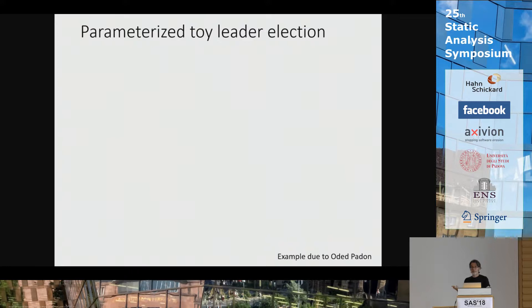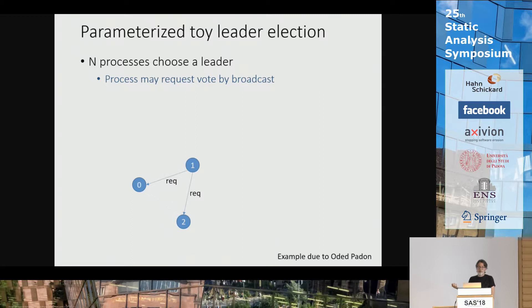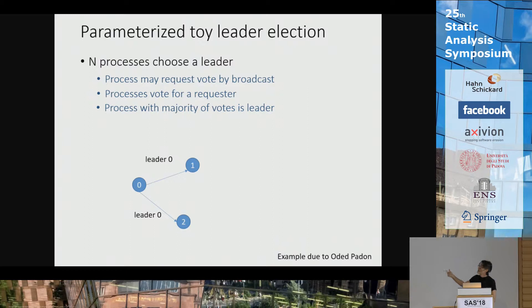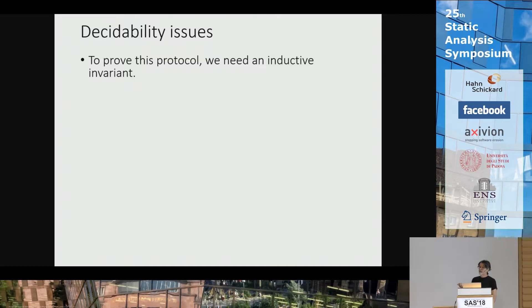Now let's talk about distributed protocols, using a very toy example — though we'll see the same techniques apply to real protocols. The toy example is a leader election protocol with n processes (n arbitrary) trying to choose a leader. If someone wants to become a leader, they broadcast a request message into the network — it might be duplicated or dropped. If you receive a request, you can vote for the sender by broadcasting a vote message, but you can only vote once. When you receive a majority of votes, you become leader. We want to prove that there is at most one leader.